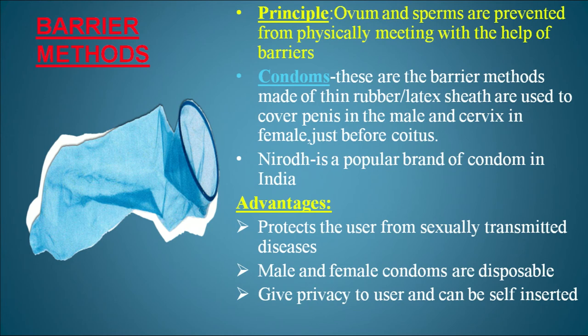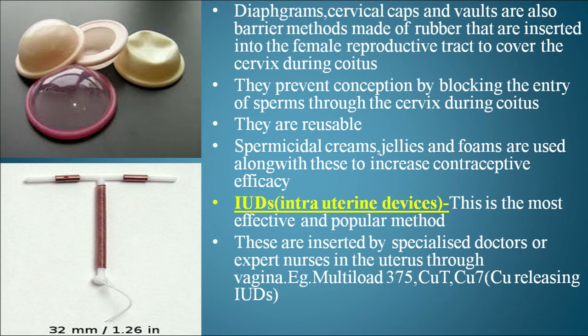The principle of barrier methods is to prevent the physical meeting of sperm and ovum. Condoms are barrier methods made of thin rubber latex sheath used to cover the penis in males and the cervix in females just before coitus. Nirod is a popular brand of condom in India. Advantages of condoms include protection from sexually transmitted diseases, disposability for both male and female condoms, and privacy since they can be self-inserted.